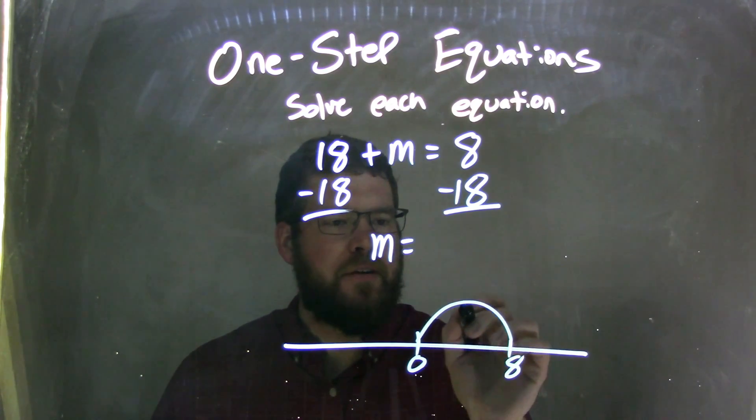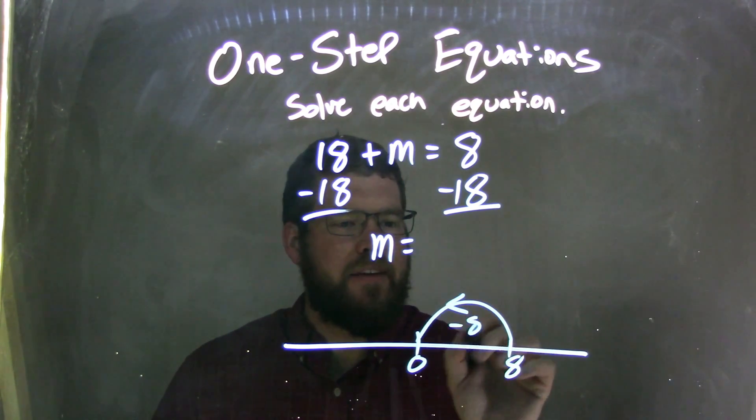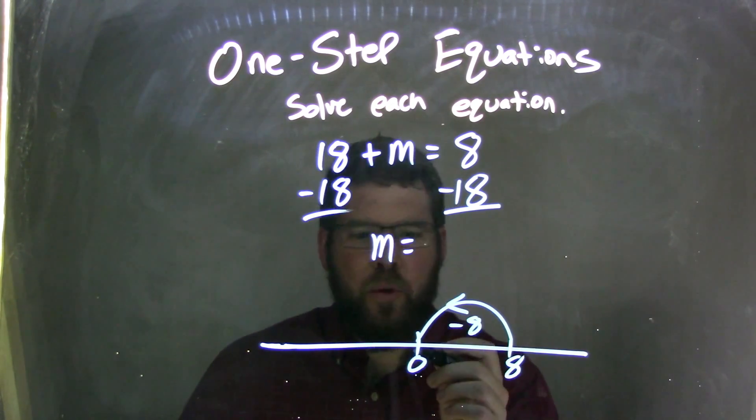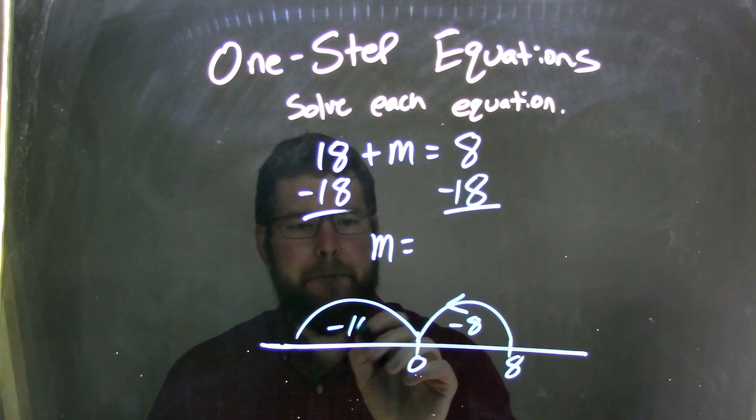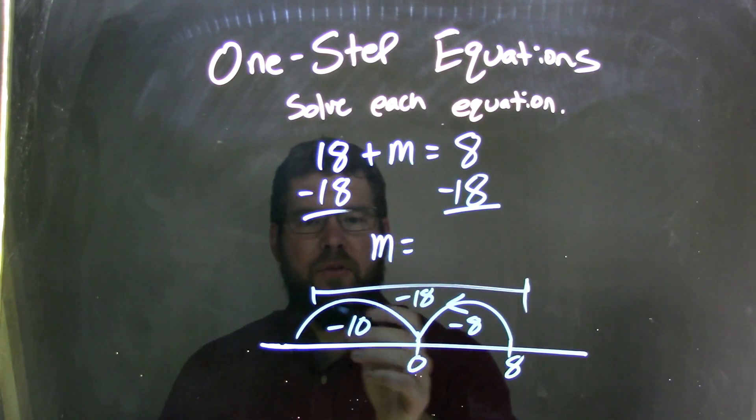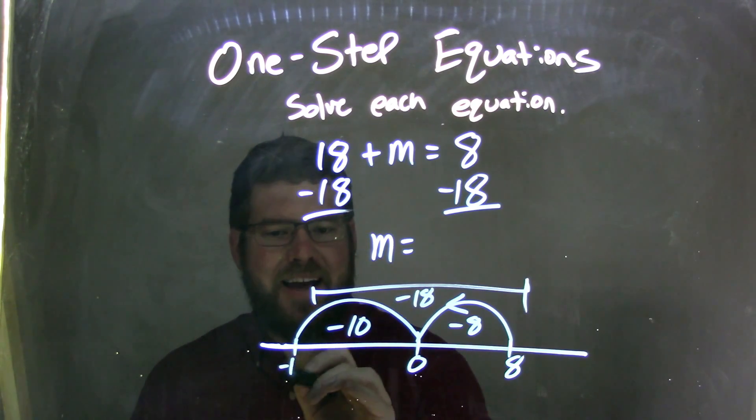and I need to subtract 18 units. Well, if I subtract 8, I'm going to the left here, right, little arrow, subtracting 8. Well that gets me to 0, and I need 10 more to get to 18, right? Minus 10 gets me a total of minus 18 here, okay?